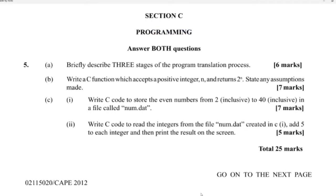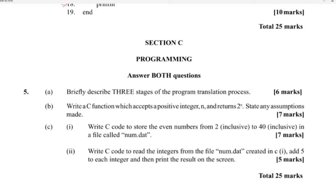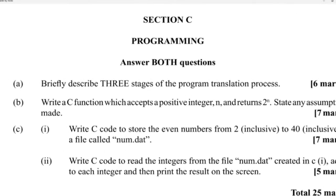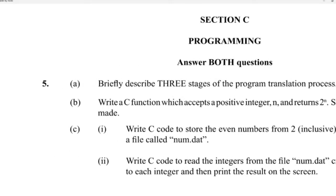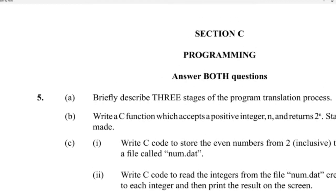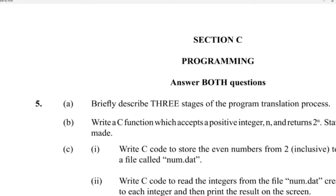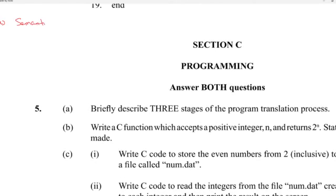Alright, 2012 module 3 programming. Let's begin. Briefly describe three stages of the program translation process. There are many stages; I'll just choose the first three. Three stages of the program translation process would be: semantic analysis, lexical analysis, and code generation.